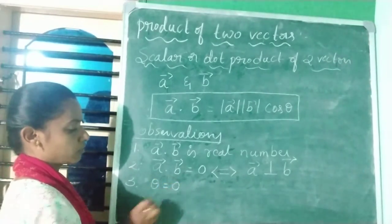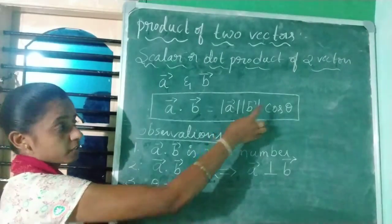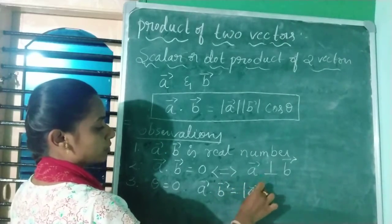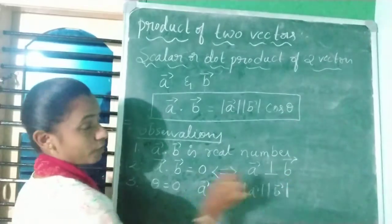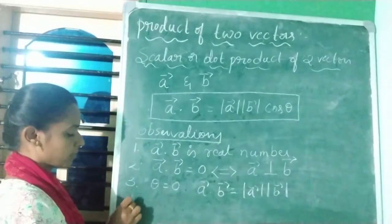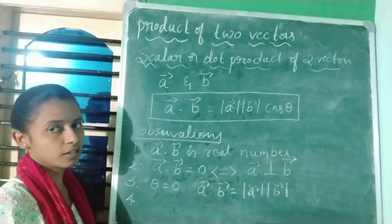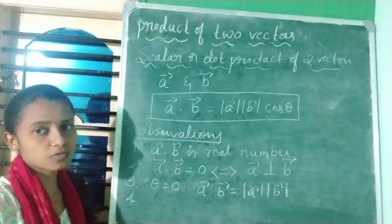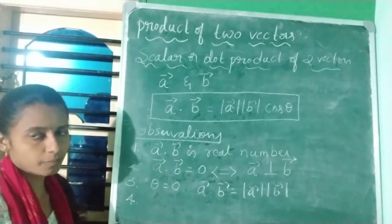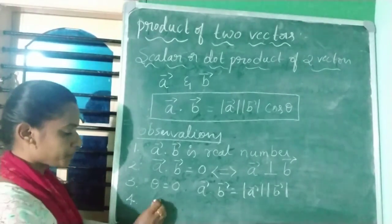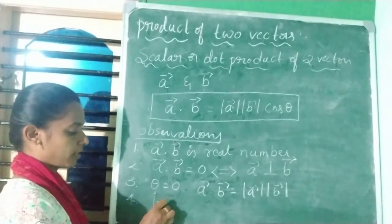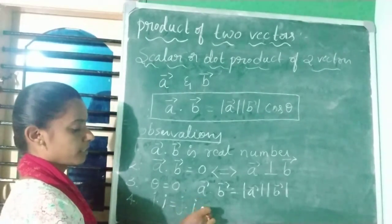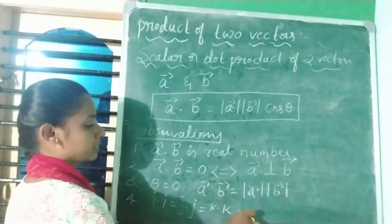If θ equals zero in the definition, then vector a · vector b equals |a| × |b|. For the i, j, k components, which are mutually perpendicular: i·i = j·j = k·k = 1. So when doing a dot product, you multiply the coefficients of i, j, k in both vectors.